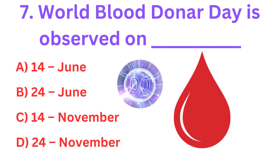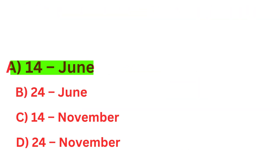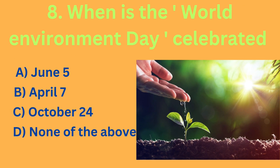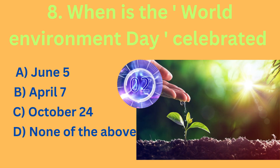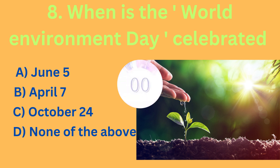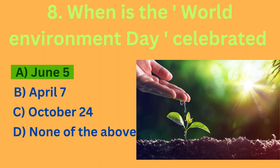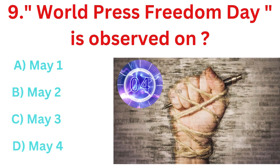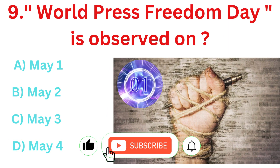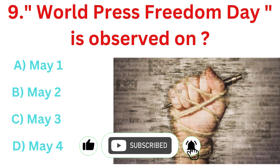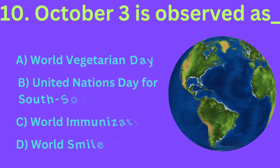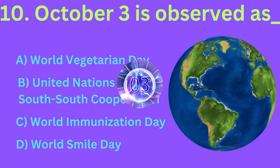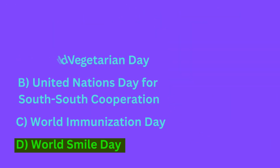World Blood Donor Day is observed on — the correct answer is option A, 14th June. When is World Environment Day celebrated? The correct answer is option A, 5 June. World Press Freedom Day is observed on — the correct answer is option C, 3rd May. 3rd October is observed as — the correct answer is option D, World Smile Day.